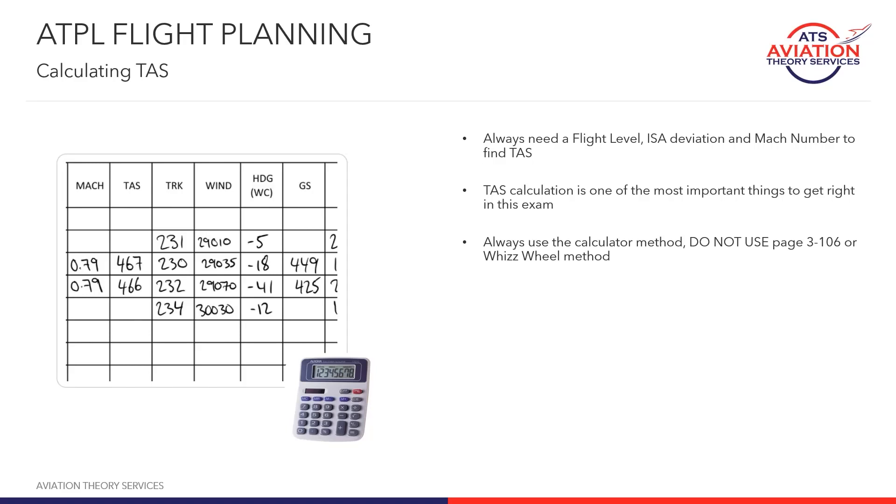In this lesson we will cover calculating your true airspeed when given a flight level, a Mach number, and an ISA deviation. These are the three things you will always need to calculate a TAS.